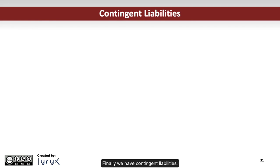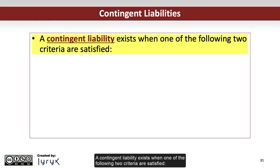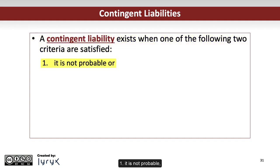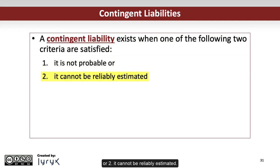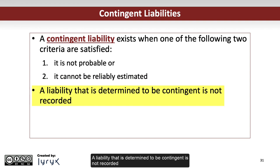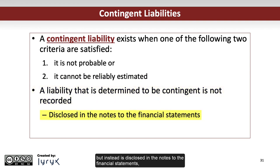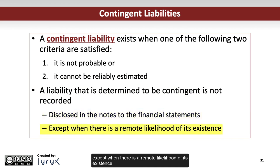Finally, we have contingent liabilities. A contingent liability exists when one of the following two criteria are satisfied: 1. It is not probable, or 2. It cannot be reliably estimated. A liability that is determined to be contingent is not recorded, but instead is disclosed in the notes to the financial statements, except when there is a remote likelihood of its existence — and we would need the help of lawyers to make that determination.